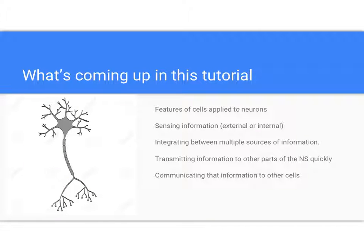In this tutorial, you've learned about the different parts of neurons: the dendrites that receive information, the cell body that integrates that information, the axon that transmits that information, and the synapse that communicates to other cells.